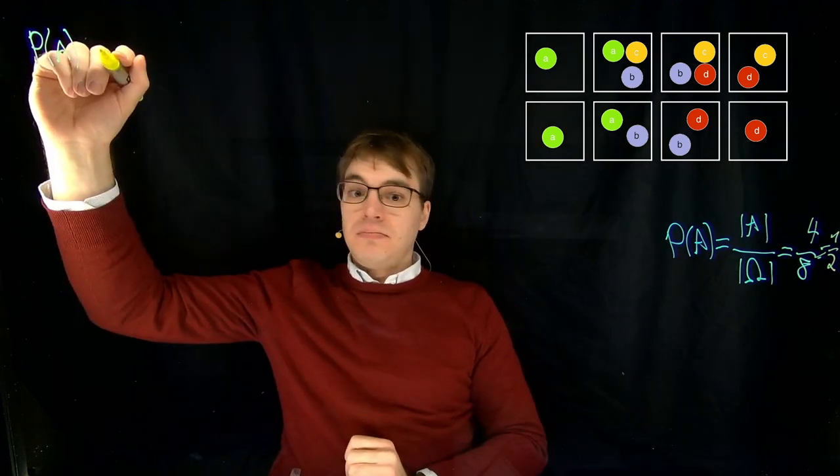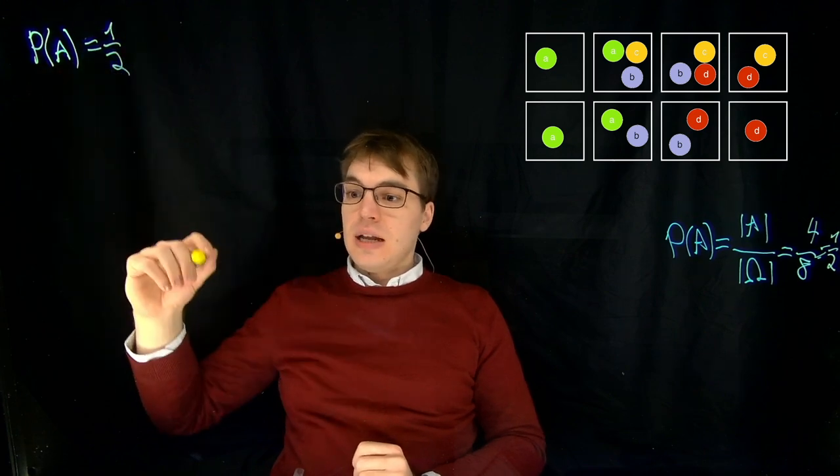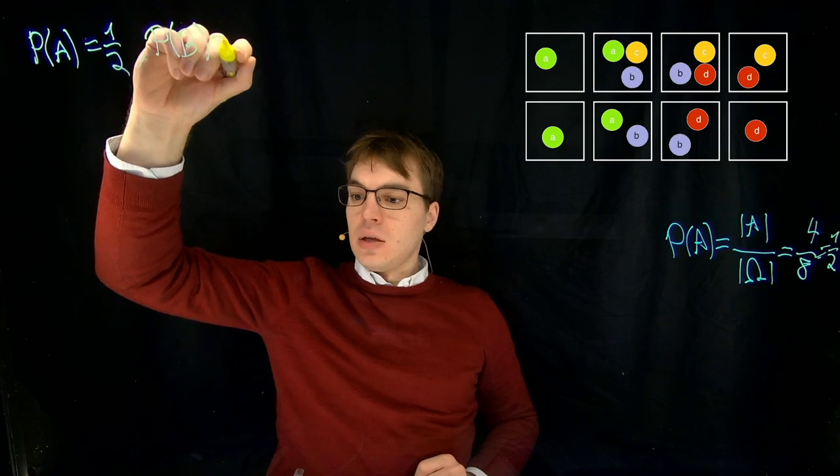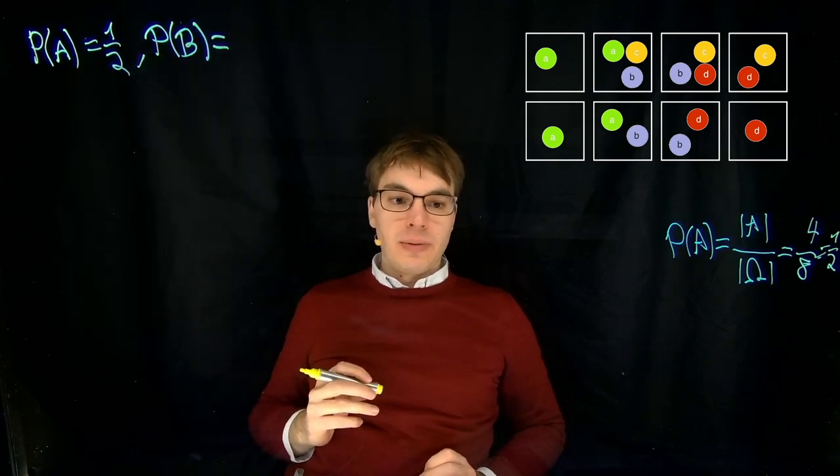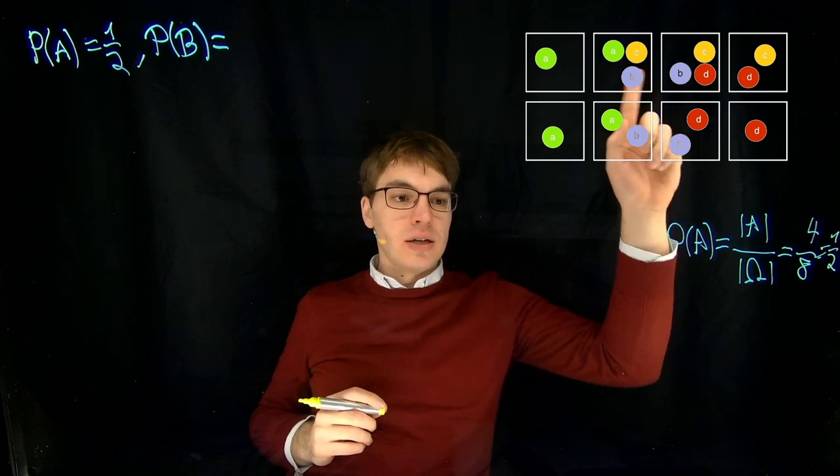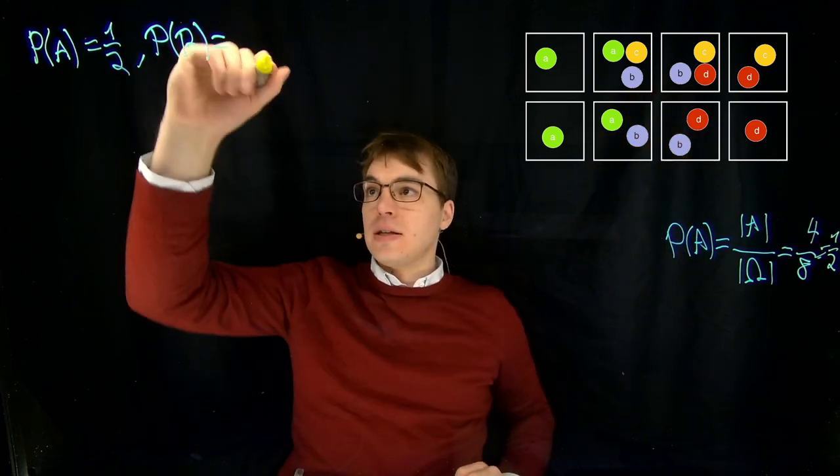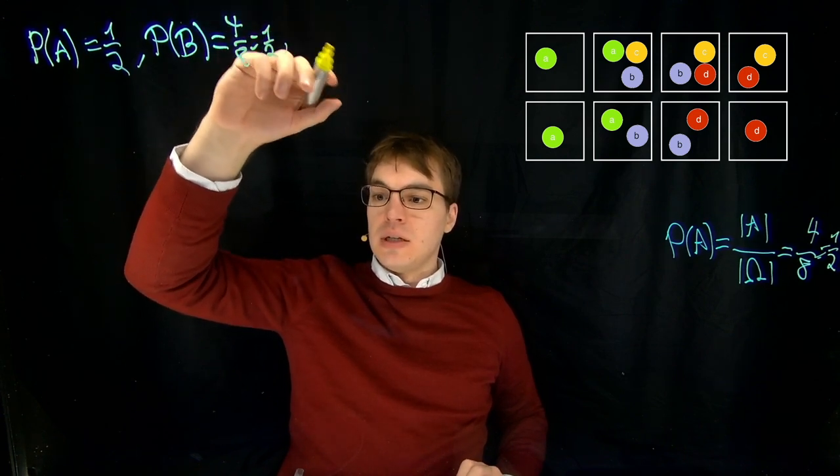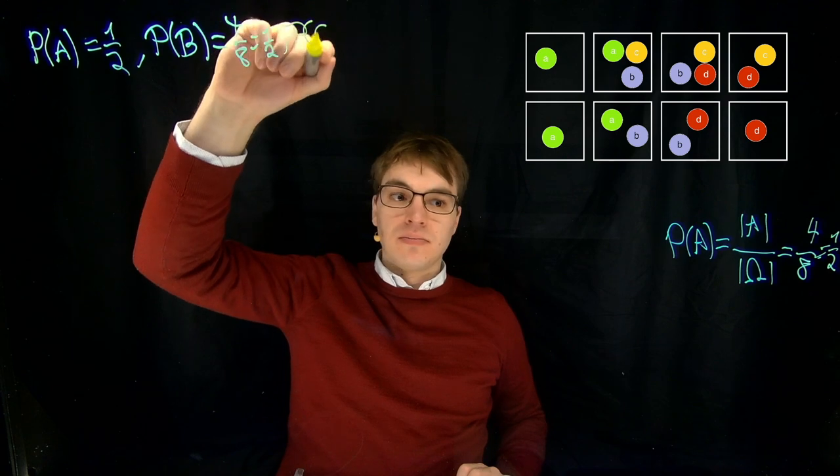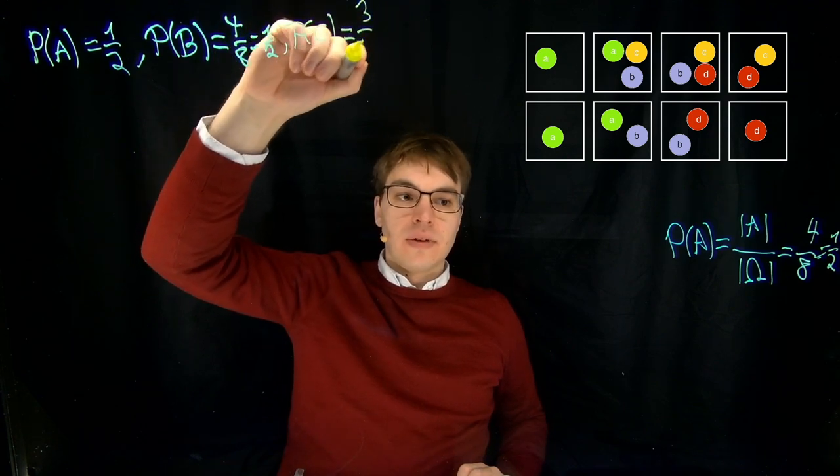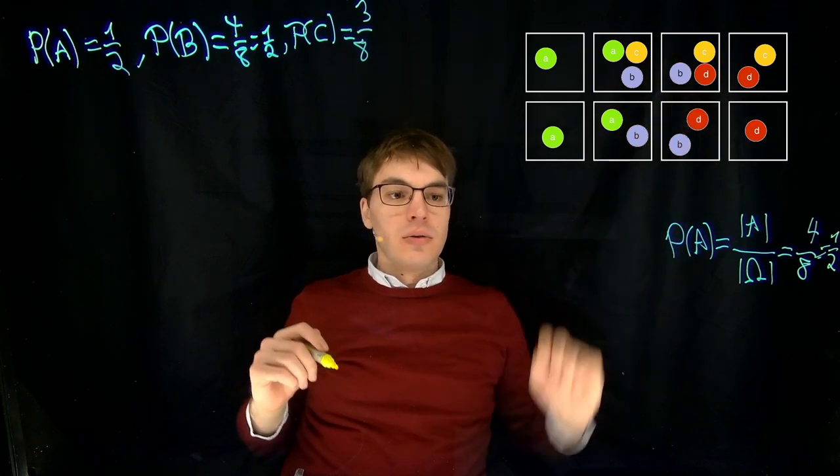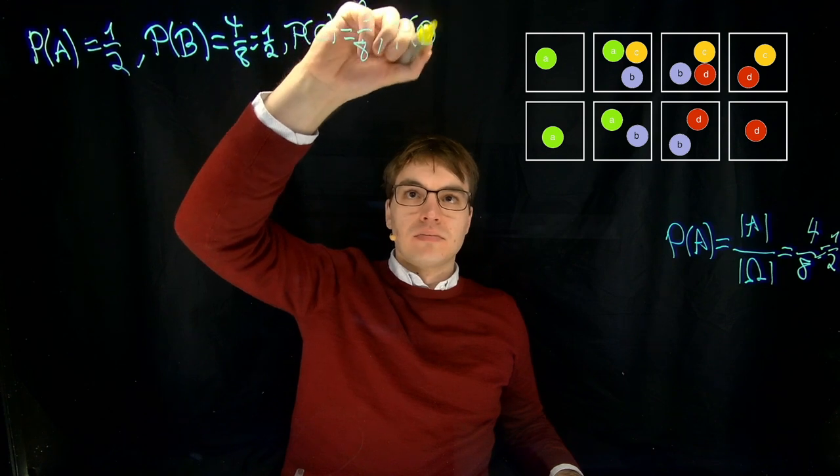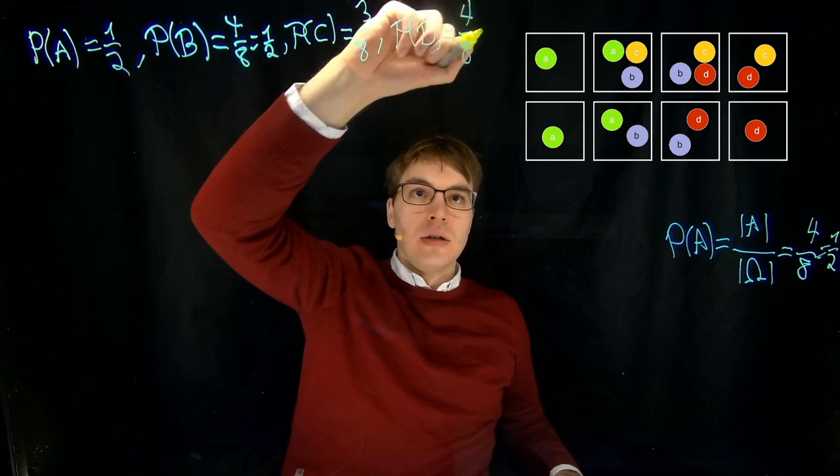Let's continue. The probability of event B, let's consider this again, so four out of eight. The probability of C, three out of eight. One, two, three. And the probability of D is again four out of eight, or one half.